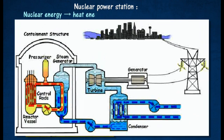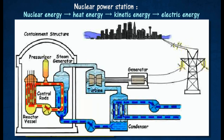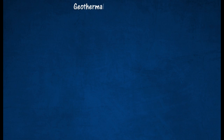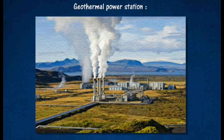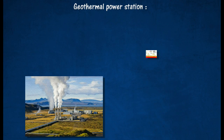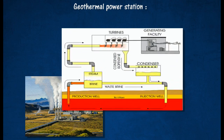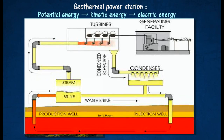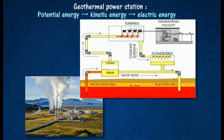The heat from the geothermal source is transferred to a loop of fresh water. This hot water is used to power a steam turbine that is connected to a generator. Geothermal energy is not widely available, and geothermal power stations can only be found in a small number of countries.